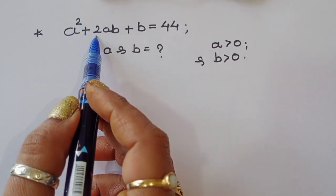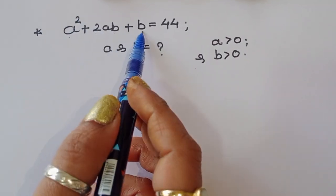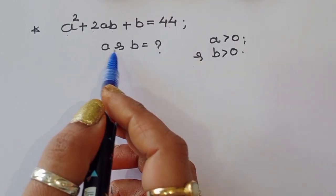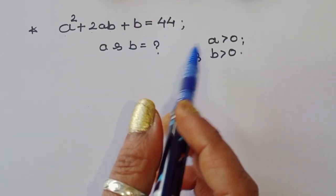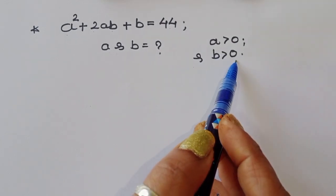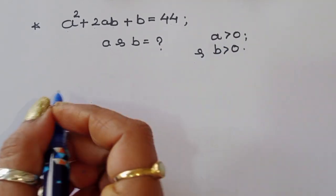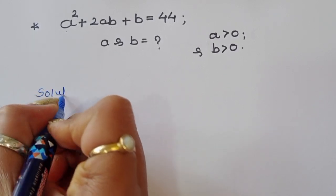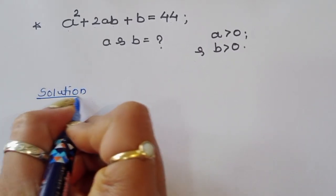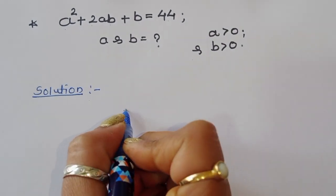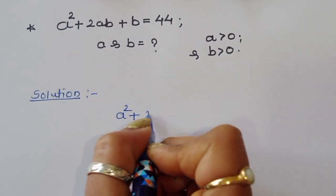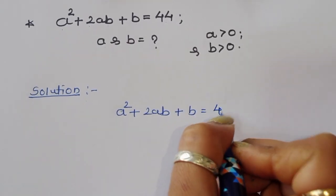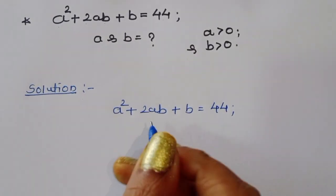The question is: given a² + 2ab + b = 44, we have to find the value of a and b, where the condition is a is greater than 0 and b is greater than 0. Let's see how we can solve this question.